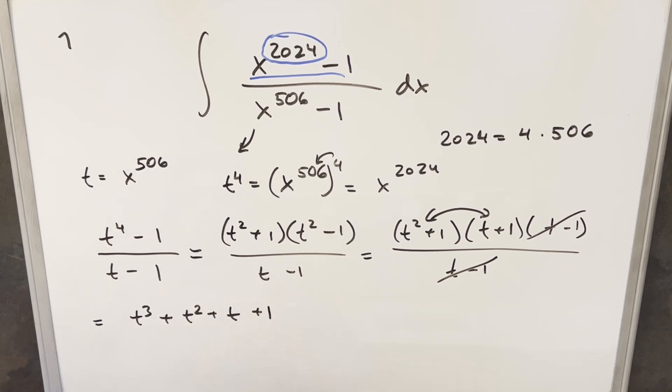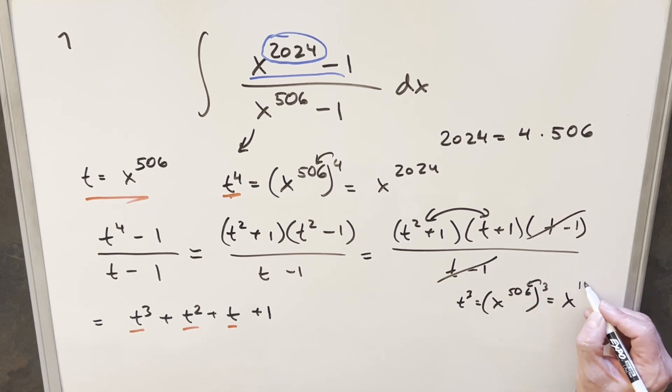But now from here, I just want to get everything back to x. So we already have a value for t. We have our t value here. We've got our t to the fourth value that we don't need. We just need t cubed and t squared. So let's see, for t cubed, that's going to be x 506 cubed. So that's going to be x, if we just distribute that in, that's going to be x to the 1518. And then for t squared, we're going to have x to the 506 squared. That's going to be x to the 1012.